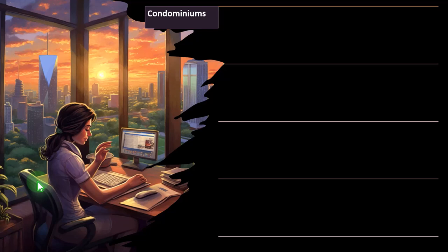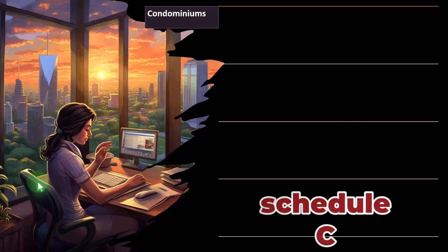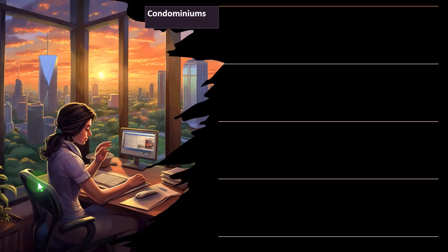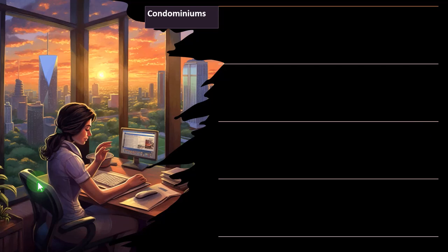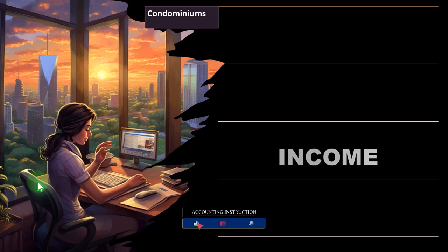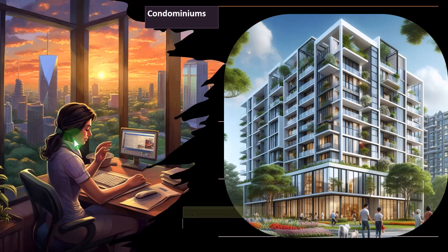We've talked about rental income in prior presentations, remembering that the rental income is similar to Schedule C in having that income statement format, but it has a passive nature. That could be beneficial in some cases because you might not be subject to Social Security and Medicare in the form of self-employment tax as you would with a Schedule C, but losses can be limited because of the passive nature. Now we'll go into some special situations for condominiums, cooperatives, and property changed to rental use.